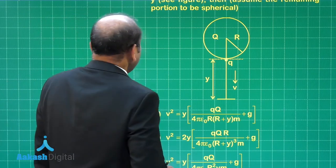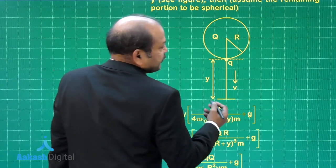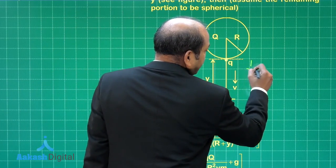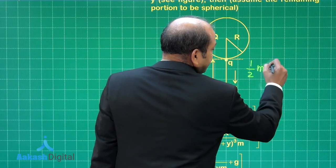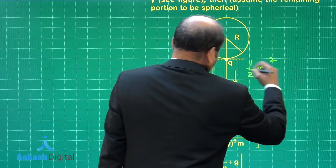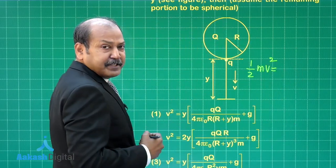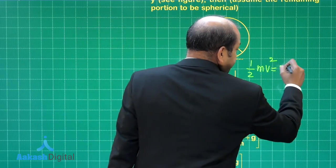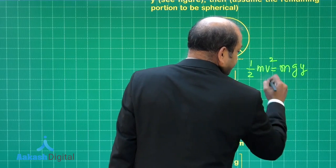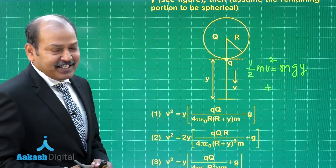Let us write those expressions. The equation we are getting here is half mv square, that is the gain in the kinetic energy, is equal to the loss in the gravitational potential energy which is mg into y plus the loss in the electrostatic potential energy.